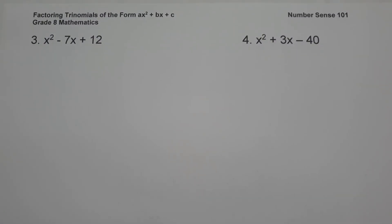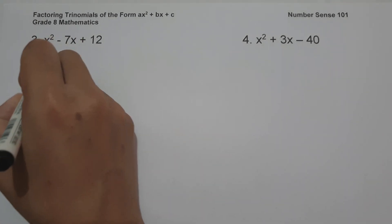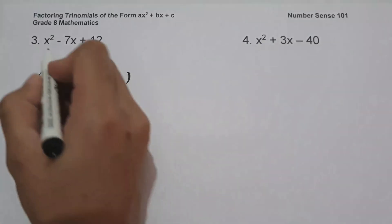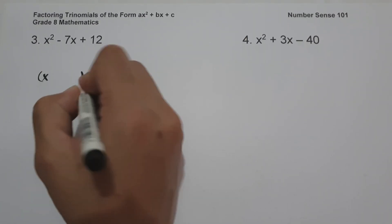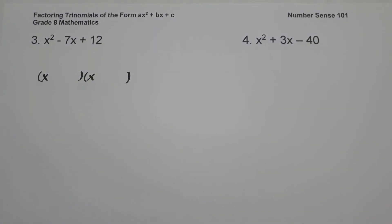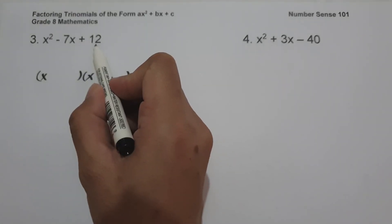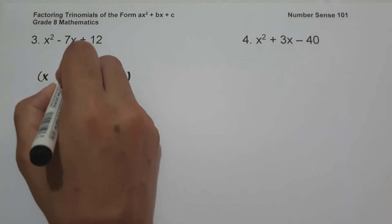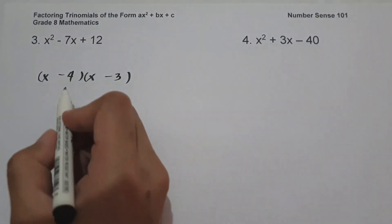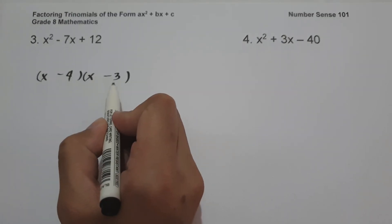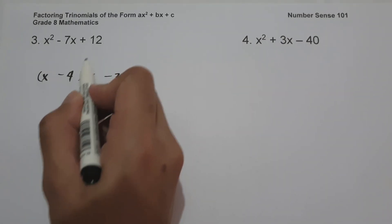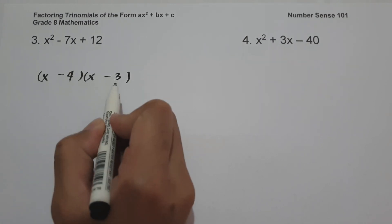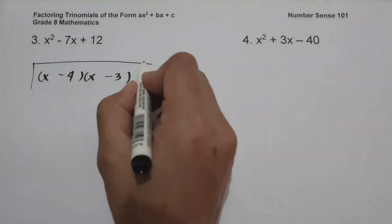Example number 3, we have x squared minus 7x plus 12. The factors of x squared are x and x. What are the two numbers that if we multiply we get 12, and if we add we get negative 7? That is negative 4 and negative 3. Negative 4 times negative 3 is 12, and negative 4 plus negative 3 is negative 7. This will be our answer.